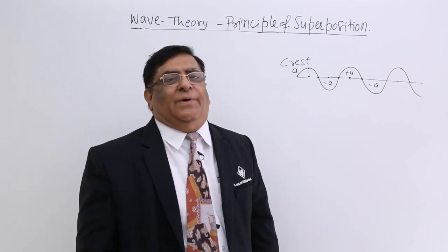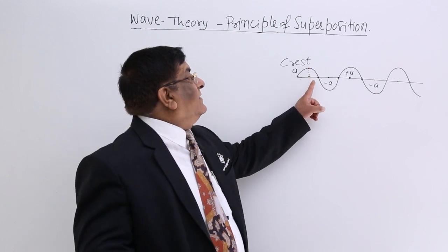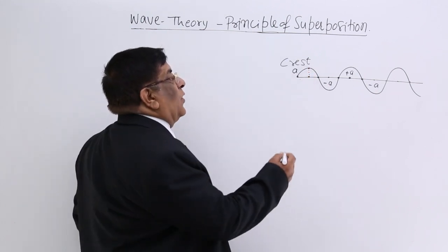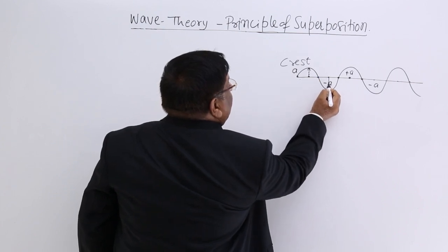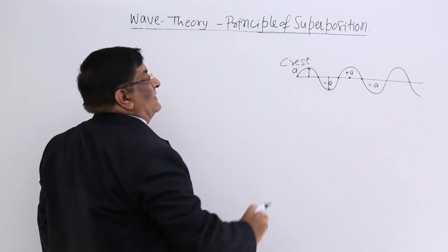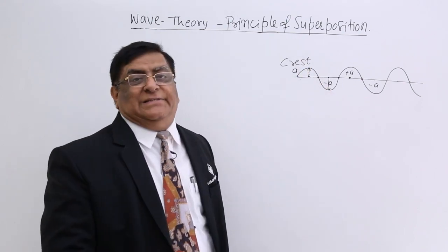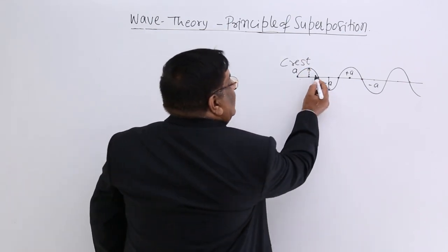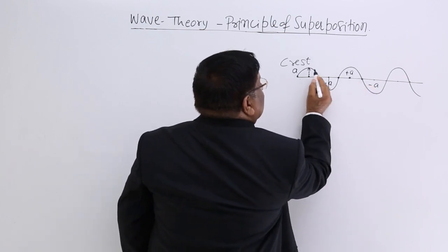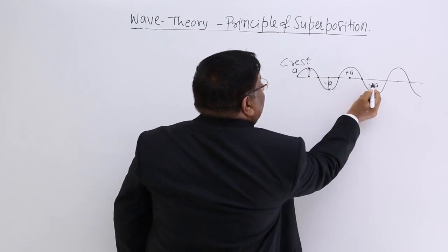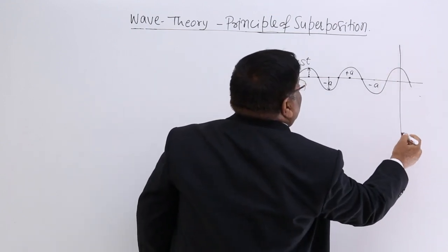In fact, light is electric field. We have seen it in electromagnetic waves. It is electric field and these are electric field vectors. At this point, electric field is maximum. Here, electric field is maximum but in the negative direction. If this is plus A, we call it minus A — and so it alternates: plus A, minus A, plus A, minus A — and somewhere there is a screen.